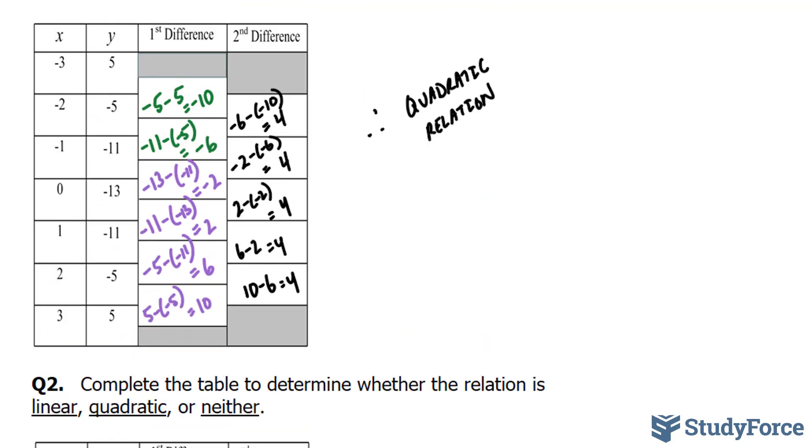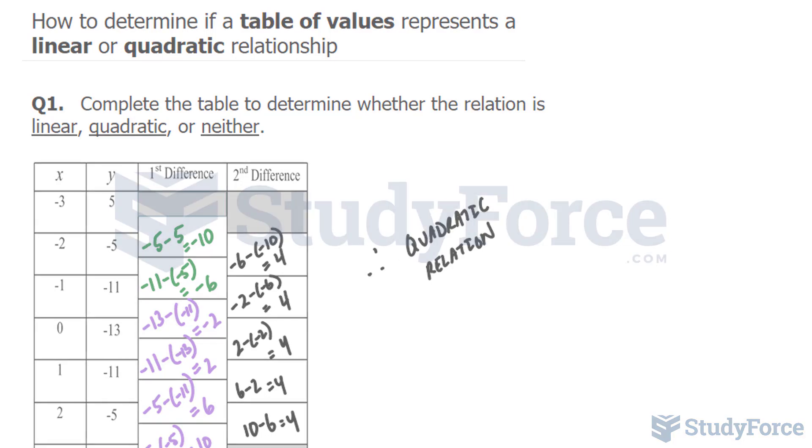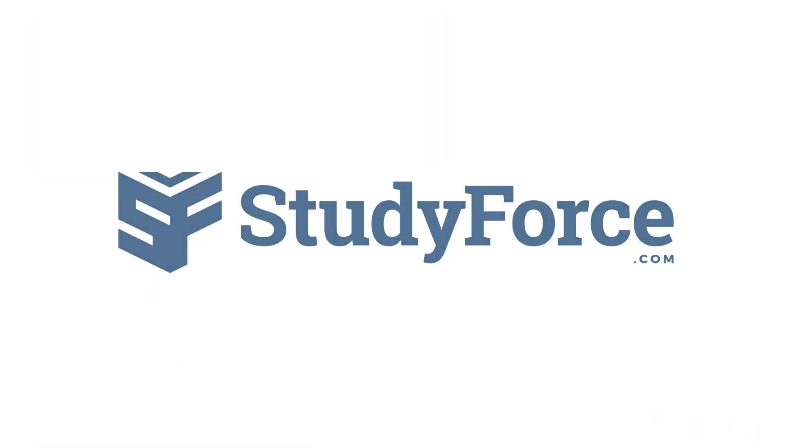And there you have it. That is how to use the first differences to determine if a table of values represents a relation that is linear or quadratic. If you found this tutorial helpful, please support our channel by subscribing or by liking this video. If you have any further questions, visit our website at studyforce.com. We're an online service for students seeking free homework help. See you soon.